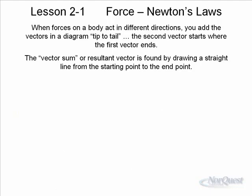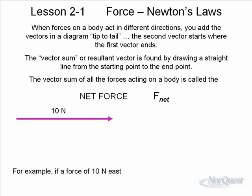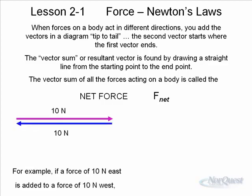When forces act on a body in different directions, you would add the vectors in a diagram, tip to tail. The second vector starts where the first vector ends. The vector sum is found by drawing a straight line from the starting point to the end point. If you had a force of 10 Newtons east and another force of 10 Newtons west, these two forces are going to cancel each other out. The resultant will be zero.